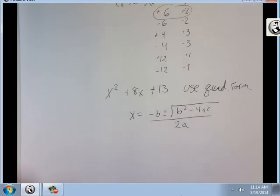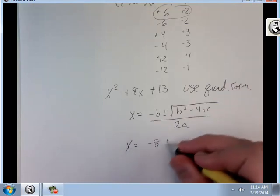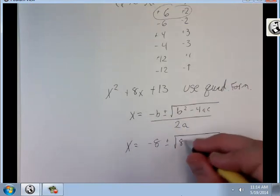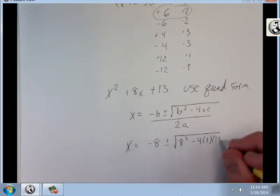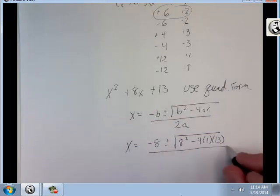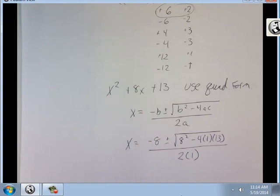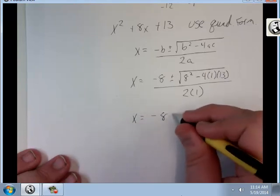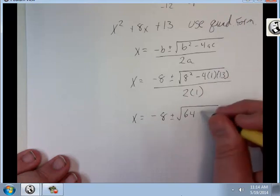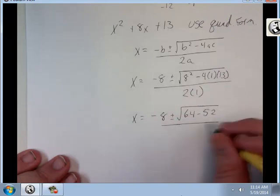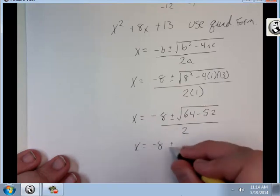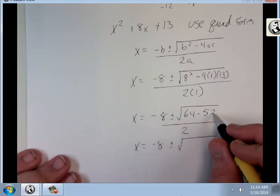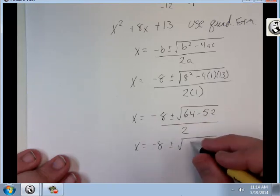All you're going to do in this one is substitute in. Negative 8 plus minus square root eight squared minus 4 times 1 times 13, all over 2 times 1. Now let's simplify it. Negative 8 plus minus square root 64 minus 52 all over 2. x equals negative 8 plus minus square root 64 minus 52 is 12 all over 2.